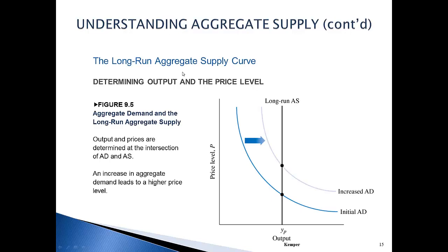If we combine the long run aggregate supply curve with the aggregate demand curve, we can see where the actual market equilibrium is. Because in the long run we're going to keep producing whether prices go down or up, we will see that price levels will gradually go up no matter what.